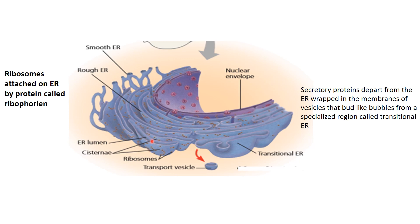The smooth endoplasmic reticulum is mainly made up of tubules and has low or no ribosomes. The vesicles are transported from the endoplasmic reticulum and may carry different types of proteins. The transitional endoplasmic reticulum is a part of the ER that has the ability to secrete proteins. When secretory proteins are exported from the ER, they are wrapped in membrane vesicles — forming bud-like bubbles from a specialized region called the transitional endoplasmic reticulum.